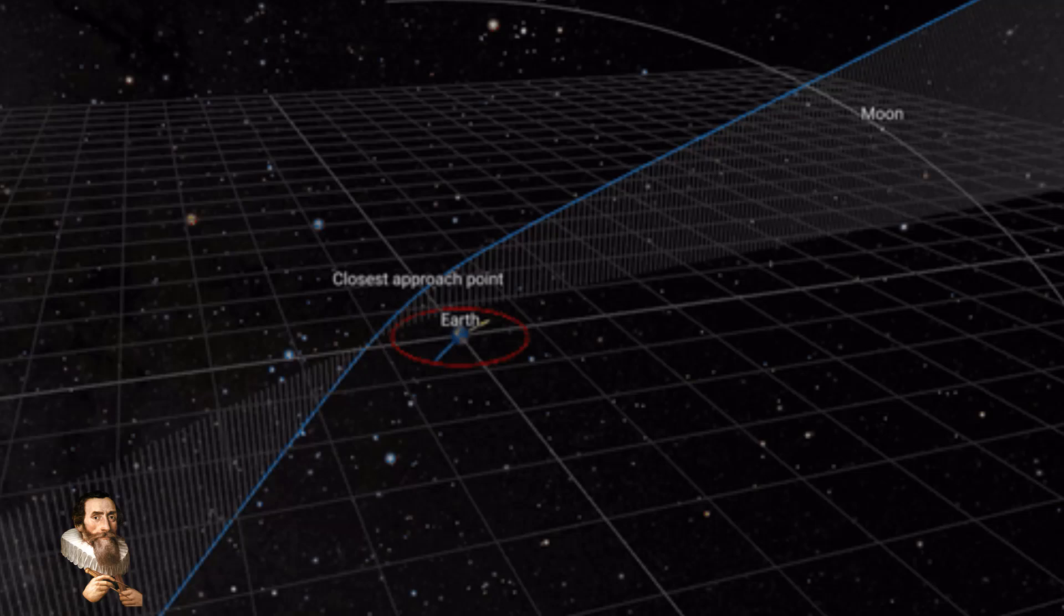If any significant changes in Apophis's trajectory are detected, scientists will assess the potential impact risk. Current analyses indicate that Apophis poses no risk to our planet for at least the next 100 years, but we won't know this to be true until 2027 when observations can take place.